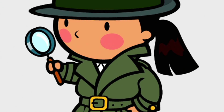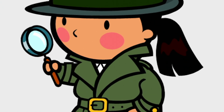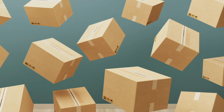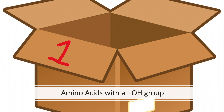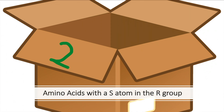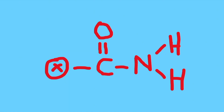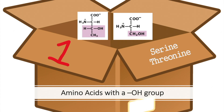Firstly, I found commonalities in the R-groups of these five amino acids, and I figured out that there are three types of similarities between each group. Let's think of these as boxes where we put each amino acid into the appropriate box. The first box contains amino acids that have a hydroxyl group. The second box contains amino acids that have a sulfur atom in the R-group. The third box contains amino acids that have an amide group — a group where you have a carbon atom double bonded to an oxygen atom and single bonded to an NH2 group and another atom or group, as you can see here.